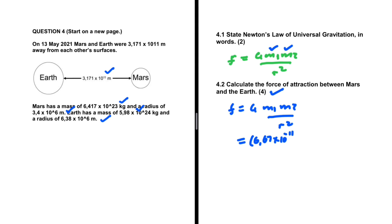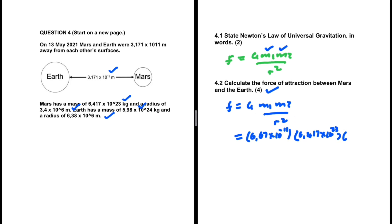Let's substitute the other variables first. G, the gravitational constant, is 6.67 times 10 to the minus 11. Then m1, the mass of Mars, is 6.417 times 10 to the power 23, multiplied by the mass of Earth, 5.98 times 10 to the power 24. Multiplication is commutative, so the order doesn't matter.